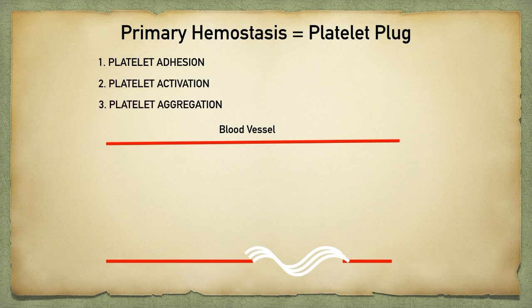Now when first learning these, they can be confusing because they all start with A. An easy way to remember this if you're ever tested on the order of events that occur to form a platelet plug: simply go from the shortest to the longest word — adhesion, activation, aggregation. Once the ball gets rolling all three will happen simultaneously, but for purposes of initial steps, remember this order.